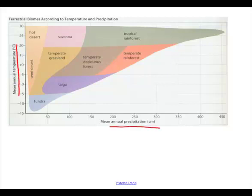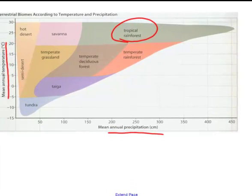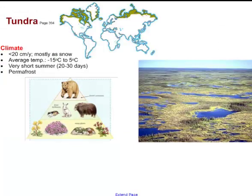For example, a tropical rainforest has both a high temperature and a high amount of rainfall, whereas the tundra has low precipitation and a low temperature. Temperature and precipitation are the two main ingredients that determine what kind of biome exists at any given location.